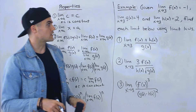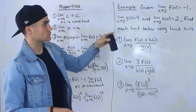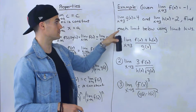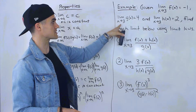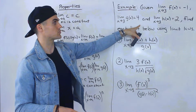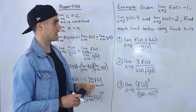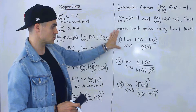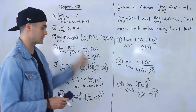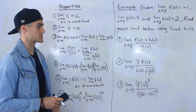The example in this video is that we're given the limit as x approaches 3 of f of x equaling negative 1, the limit as x approaches 3 of g of x equals 4, and the limit as x approaches 3 of h of x is equal to 2. We have to find each of these limits using these limit laws, these properties of limits.